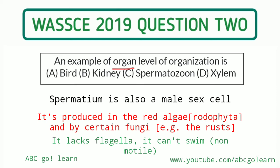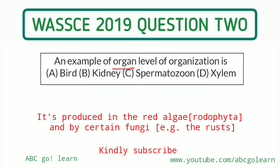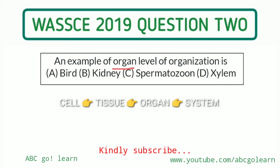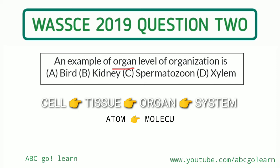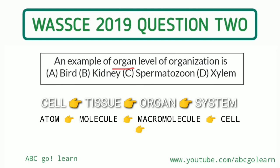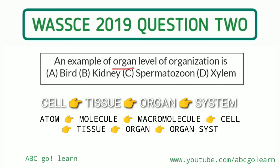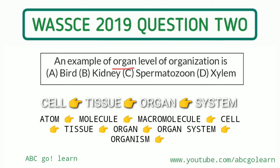Let me tell you more about the levels of organization. Normally, you go from cell to tissue, tissue to organ, organ to organ system, and so on. But the detailed level of organization goes: atom → molecule → macromolecule → cell → tissue → organ → organ system.